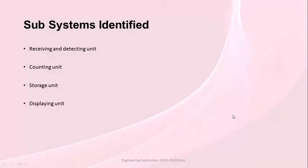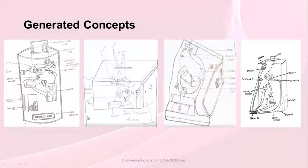Now let's see about the concepts. These are the four concepts which we have generated. As you can observe, each concept is different from the others — one has a cylindrical shape, another is a cube, another is a cuboid, and the other one is a trapezoidal shape.